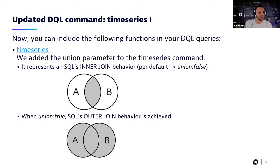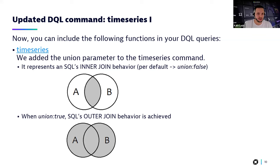We have a similar addition to the time series command for metrics in GRAIL. You can now include the union parameter. If you don't include it, the union parameter defaults to false, and this default behavior resembles the SQL inner join behavior. When you use the time series command to combine two different metrics for hosts, it will output records only for hosts that have both metrics. You can set union to true to obtain the SQL outer join behavior.